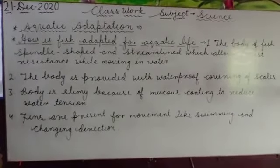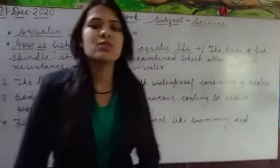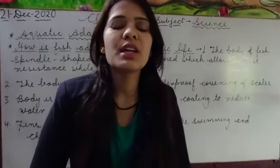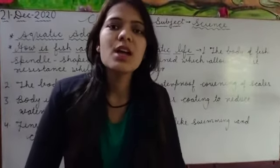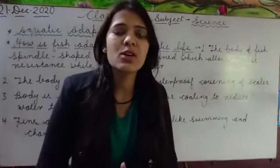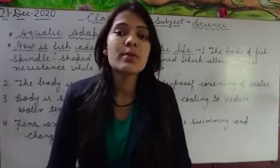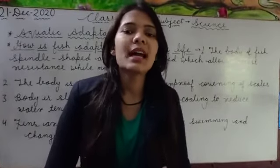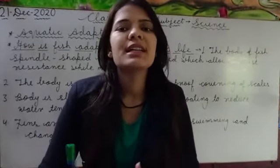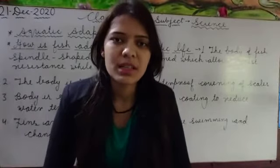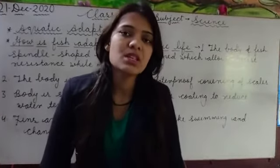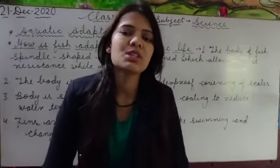The fourth point is fins — fins are present for movement, specifically for swimming. The fins help the fish in movement. The mode of locomotion is swimming. The fins and tail also help the fish change direction. So fins and tail help in swimming and direction change. These are some features of fish for aquatic adaptation.